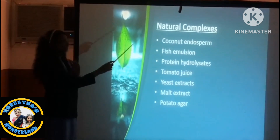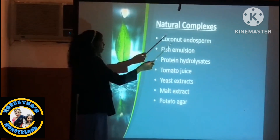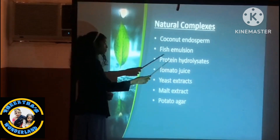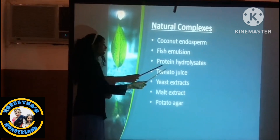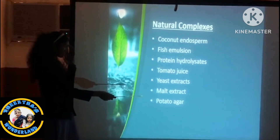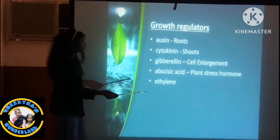These are the natural complexes, such as coconut endosperm, phytol endosperm, protein, tomato juice, yeast extract, malt extract, and potato agar.